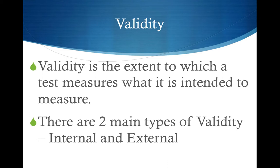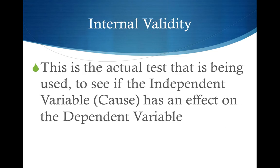So now there are two main types of validity: there's internal validity and there's external validity. Internal validity is about the actual test being used, which basically checks if the independent variable — which is the cause — has an effect on the dependent variable, which is the thing being measured. The independent variable is the thing that's being manipulated.